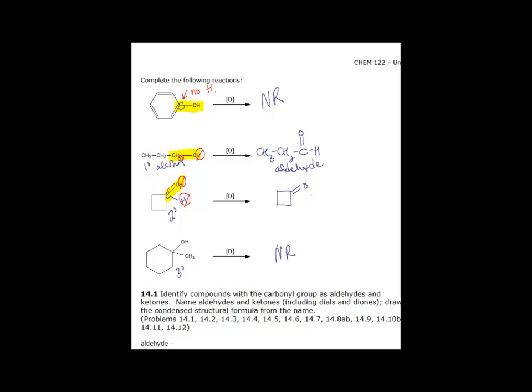And the last reaction, we have a tertiary alcohol. If you look at the carbon bearing the OH, there aren't any hydrogens. So there's a hydrogen here, but we don't have any hydrogens here. So tertiary alcohols, when you try to oxidize them, you get no reaction.